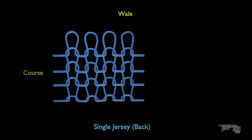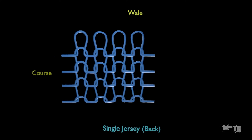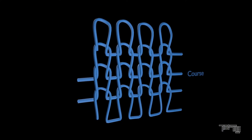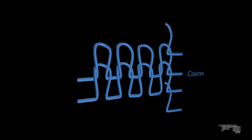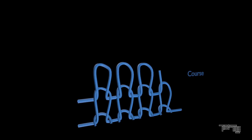The back side shows the top and bottom of each loop. It creates a rough surface and looks like columns of interlacing semi-circles. Single jersey can be unraveled from both ends, whether it is knitted first or last. It is mostly used in shirts, leggings, undergarments, and many more items.